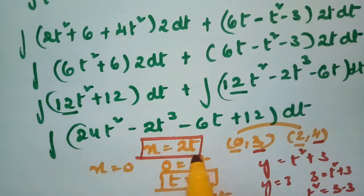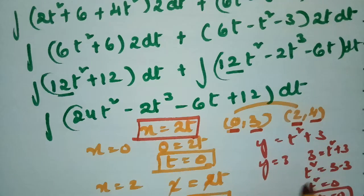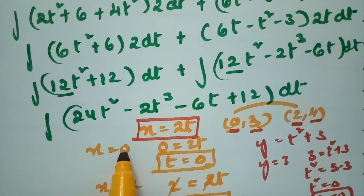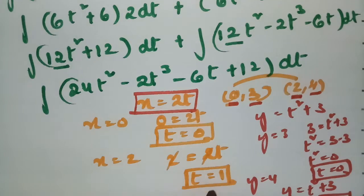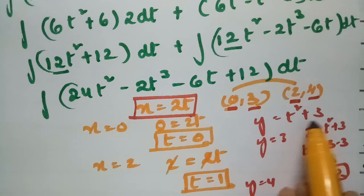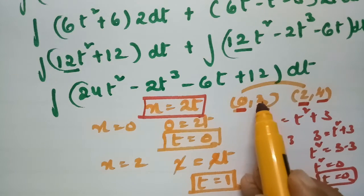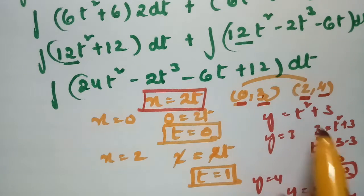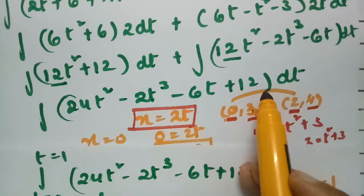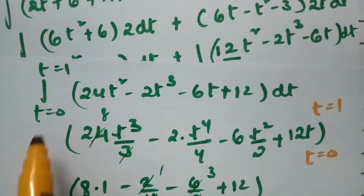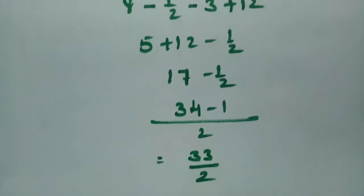For the limits: from x = 2t, the x-values 0 and 2 give t = 0 and t = 1. From y = t² + 3, the y-values 3 and 4 also give t = 0 and t = 1. So t varies from 0 to 1, and after calculating, the final result is 33/2.